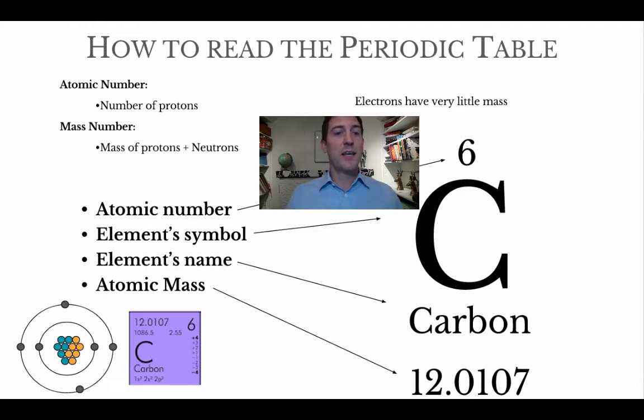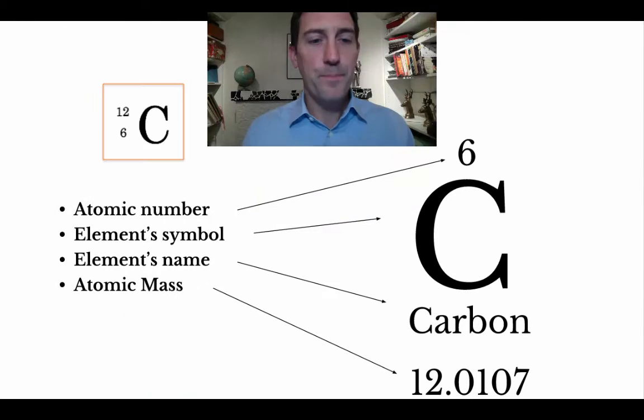For our carbon example here, the atomic number is six, the elemental symbol is C, the name is carbon. This is really important down there at the bottom, it says the mass is 12.0107. If a proton has a mass of one and a neutron has a mass of one, how do we get to that 0.0107? I'm going to show you in just a minute, but for now let's just focus on that 12 at the beginning.